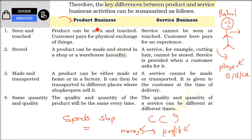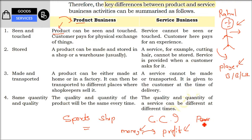The idea of business is to make profit. In a product business, the products can be seen and touched — the customer can go, check, verify, and choose. For example, going and buying vegetables: which is good, which is bad, defective or non-defective. The product is taken in exchange for money — you pay rupees or dollars and you get the product.